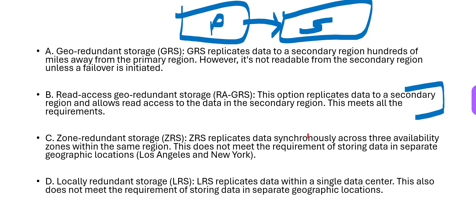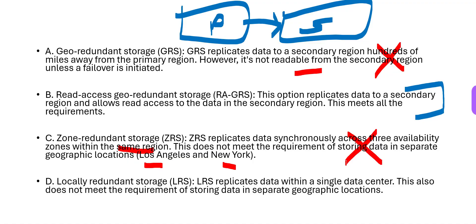Why won't GRS work? GRS also replicates data to the secondary region, but you cannot read from the secondary region. The question requires reading from both the primary and secondary location — GRS does not support that. Zone Redundant Storage (ZRS) does not meet the requirement of separate locations like Los Angeles and New York — it replicates data across three availability zones within the same region only. So ZRS will not work either.